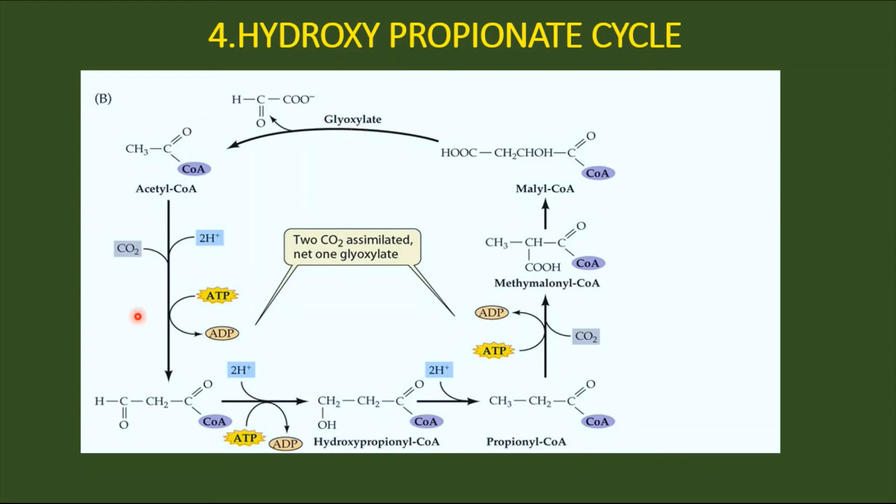The hydroxy propionate pathway has so far been confined only to certain bacteria like Chloroflexus, and it appears to be very important in evolutionary studies. Chloroflexus bacteria is a hybrid photo-autotroph in the sense that its photosynthetic mechanism shows features of both purple sulfur bacteria and green sulfur bacteria.